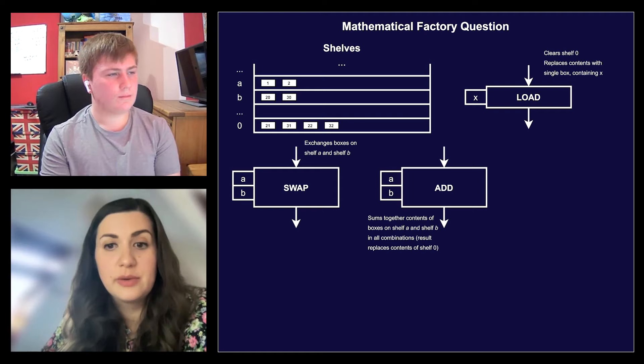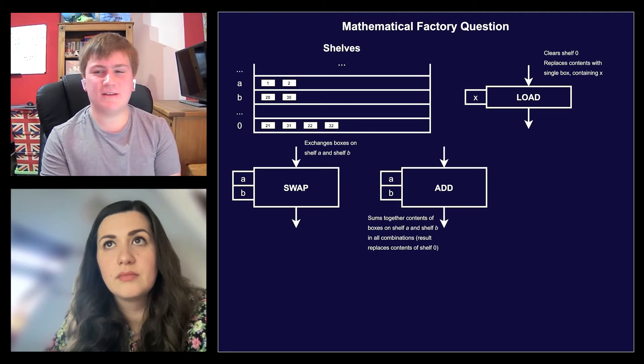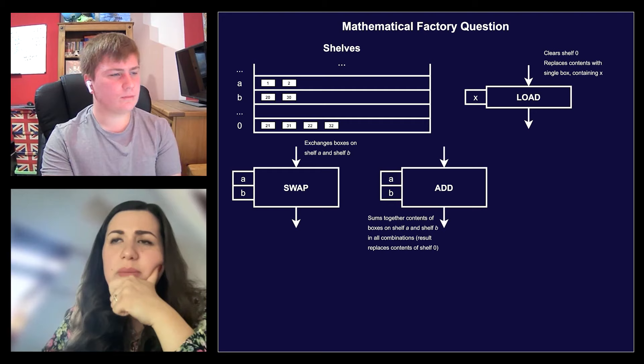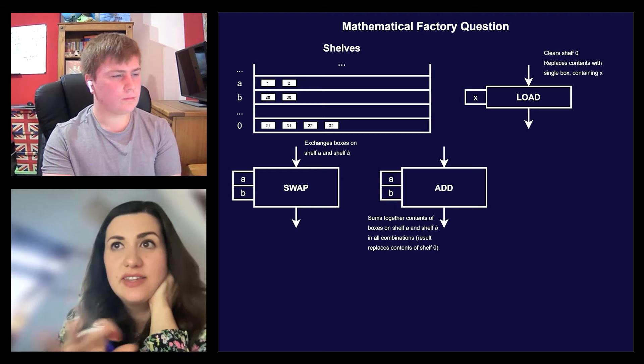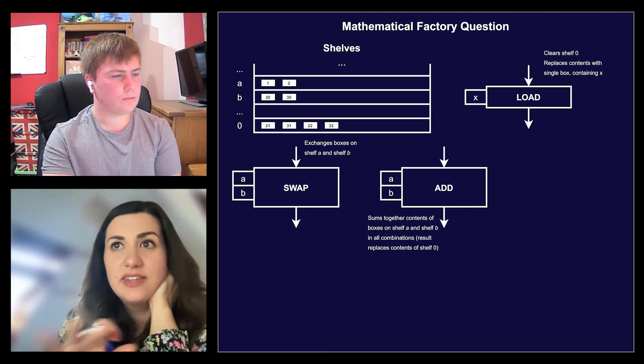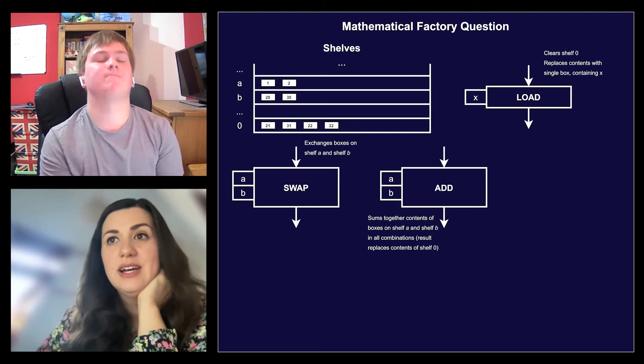Tom initially suggests M if M < N and N if N < M, but after reconsidering the example with two boxes on each shelf producing four results, corrects himself: it would be M times N because you add each combination. That's right, great. So that was the add instruction.